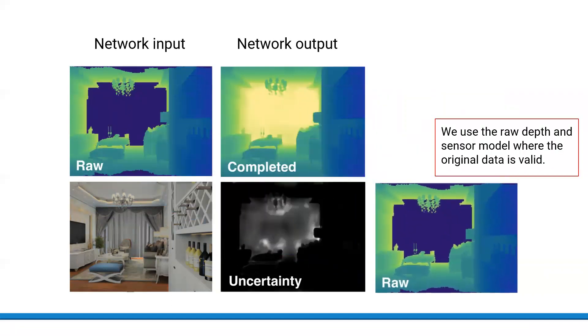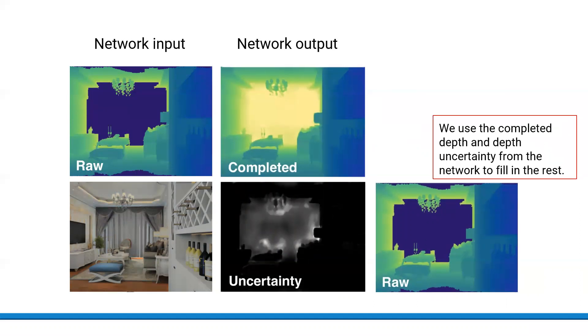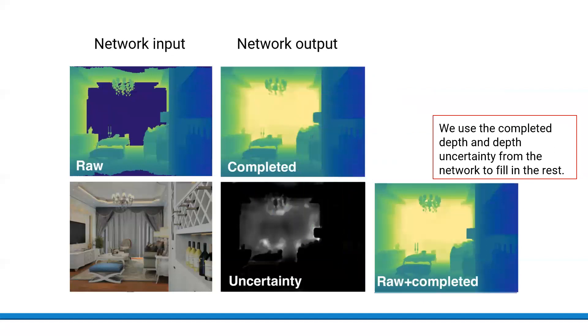For mapping, we use the raw depth and a standard camera sensor model where the original data is valid and there are no holes. We then allow our network to fill in the missing information using the completed depth and the depth uncertainty.